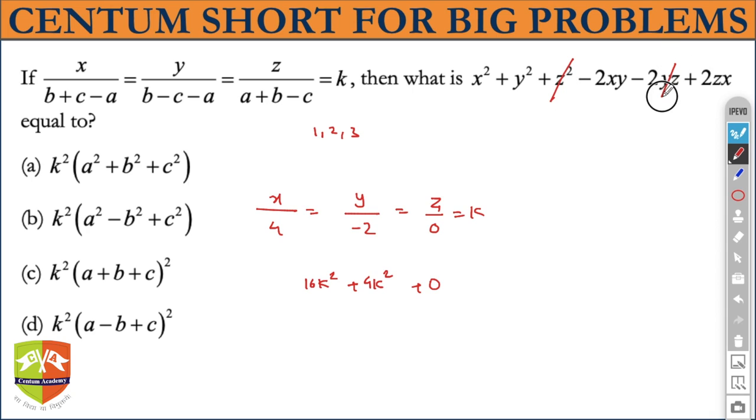So z is 0, this becomes 0, this becomes 0, this becomes 0. Minus 2x into y, clear? 4k minus 2k is minus 8k². And this became 16.